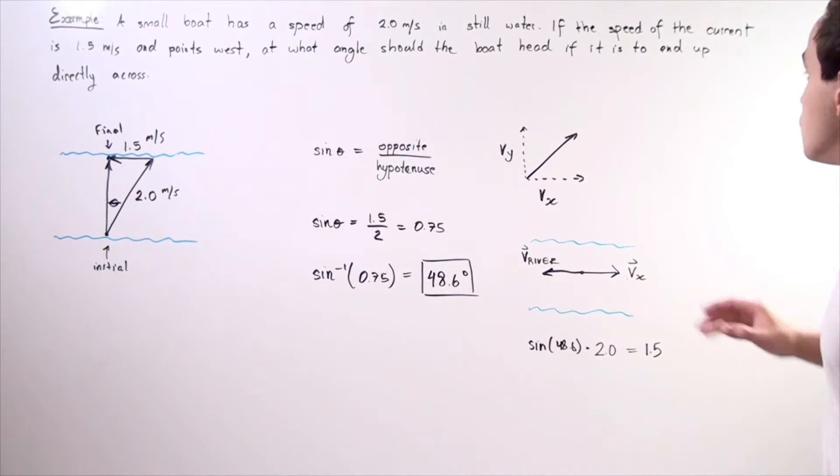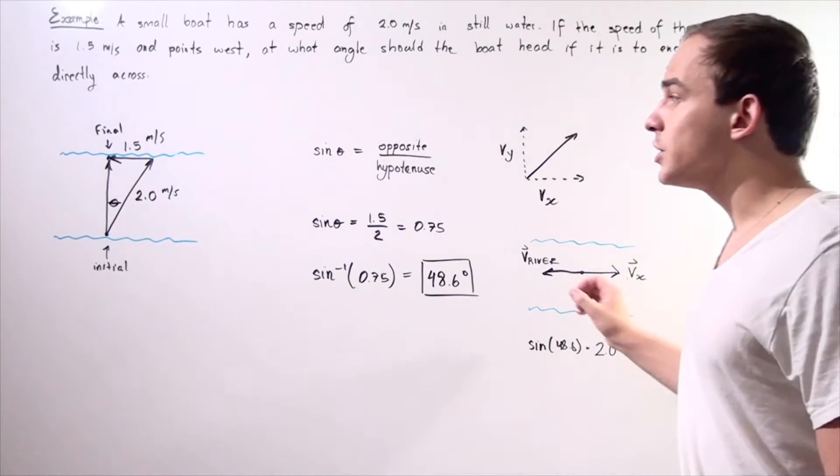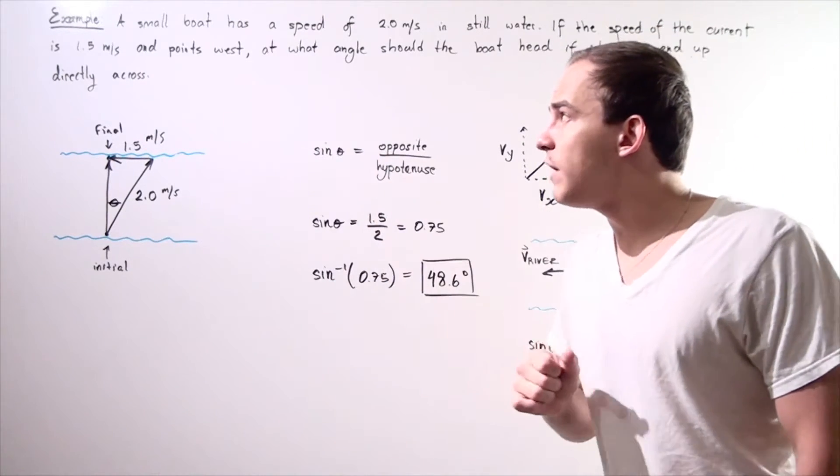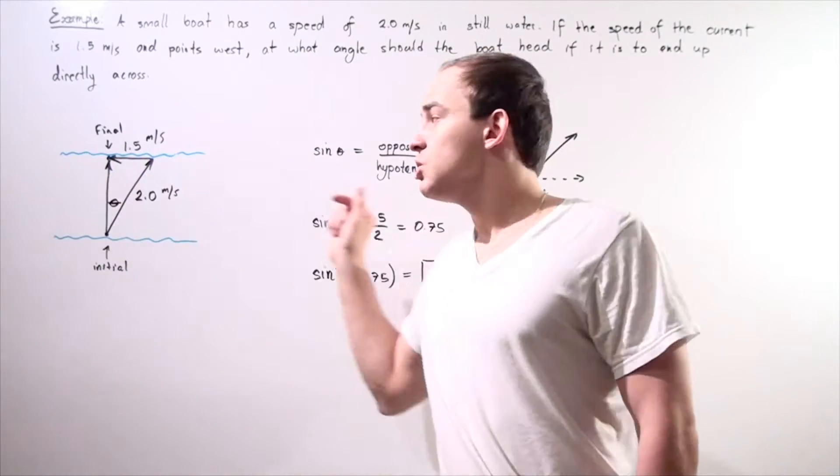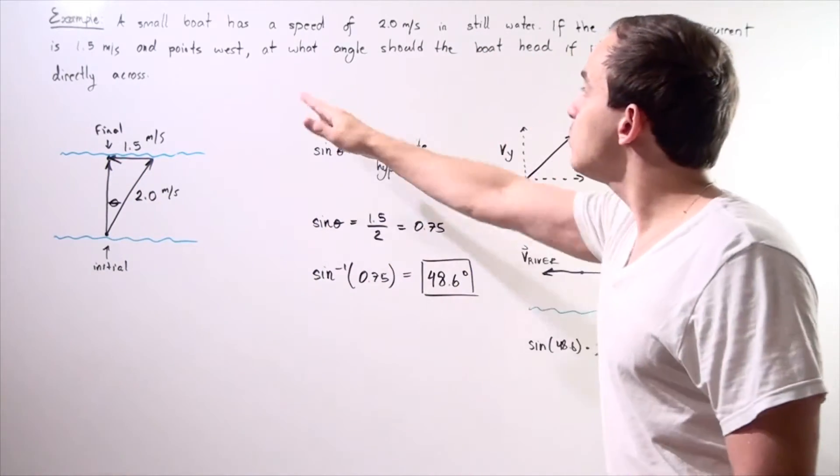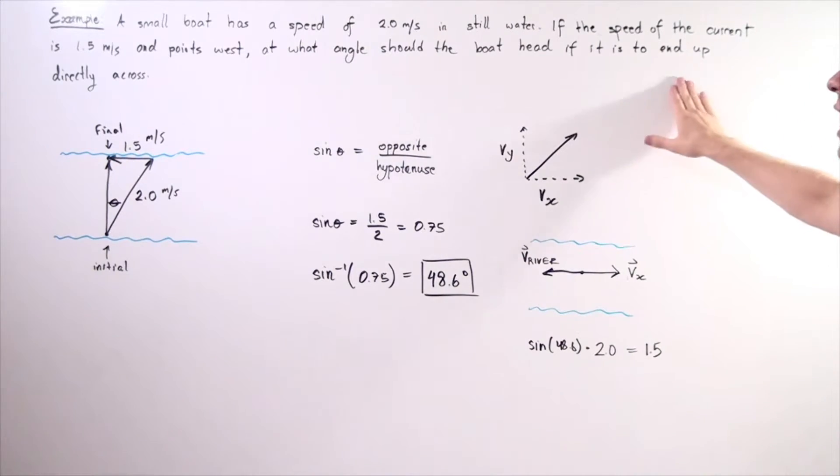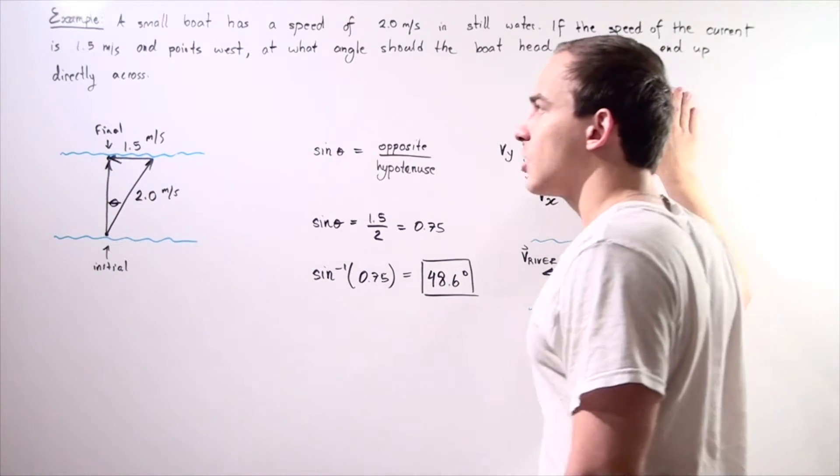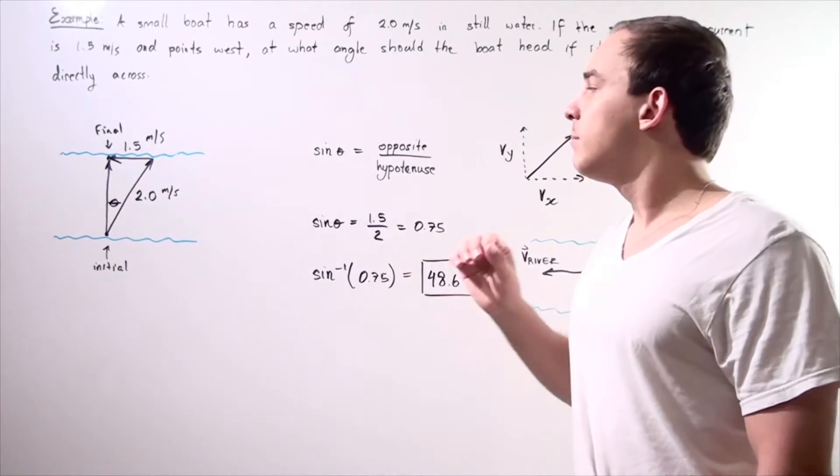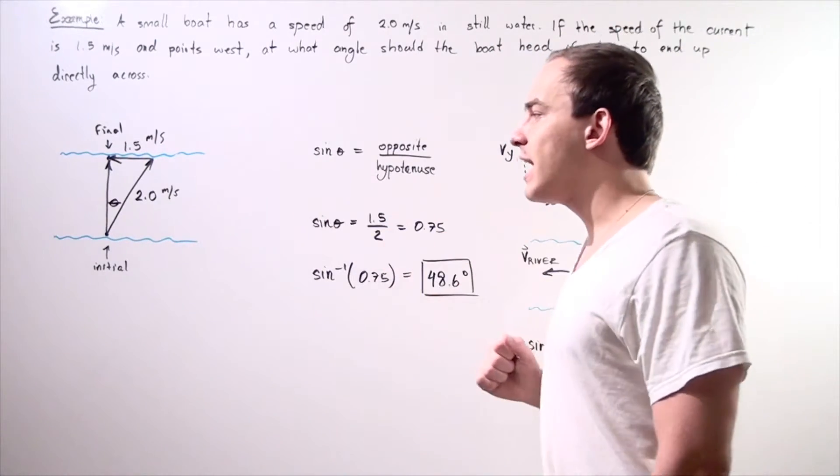Let's also suppose that the speed of the current in the river is 1.5 meters per second and points west, so to the left. At what angle should the boat head if it is to end up directly across the river, directly across its initial position? So let's draw our diagram.